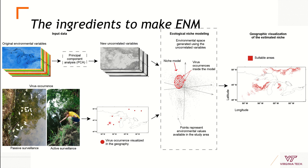If there is an error in the occurrence data, it will be amplified in the modeling process and will influence how we interpret the final map of the disease or species distribution.